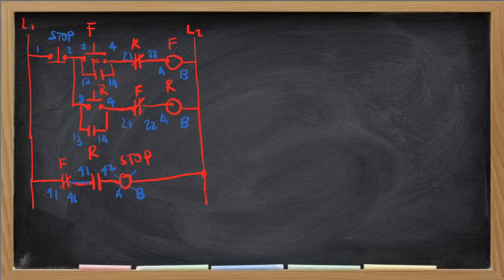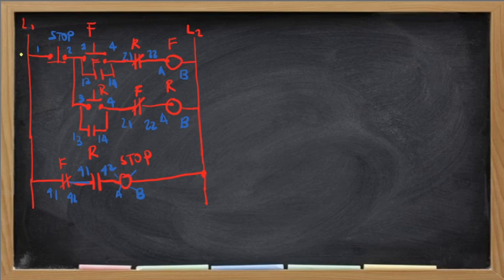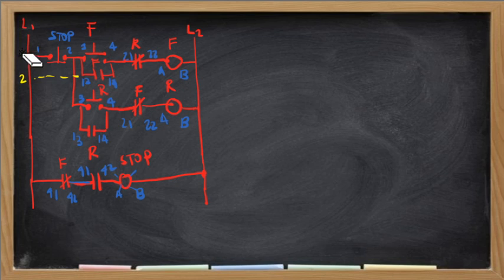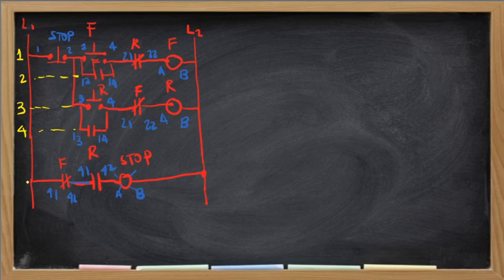The very first thing to do is to identify the number of rungs. Because our given circuit is a ladder diagram, a ladder has rungs. A rung is a horizontal line from one side to the other. This complete horizontal path from line one to line two is rung number one. We also have rung number two, rung number three, rung number four, and lastly rung number five.